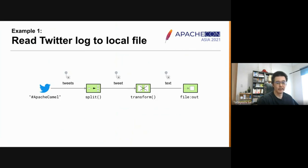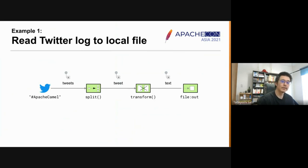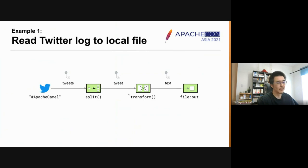Let's dive into real world examples. The first example: let's search Twitter with some keyword and write the returned results to a file. For those not familiar with Twitter, you can substitute it with your favorite SNS such as Weibo. In this example, we use the Camel Twitter search component to search tweets with the hashtag Apache Camel, then use a Splitter EIP to split the returned set of tweets into individual tweets.